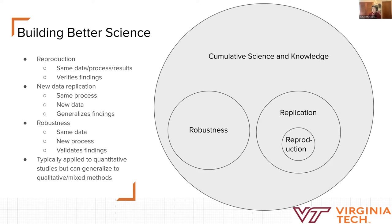Within this space of trying to promote cumulative, reliable science and knowledge, there are a few different things we can do. Three of them I'll talk about are reproduction, replication, and robustness.